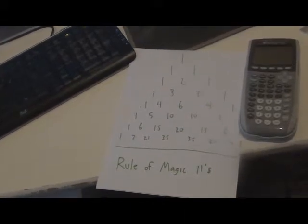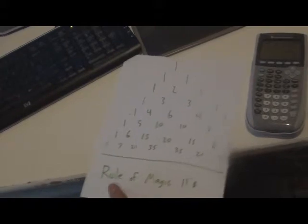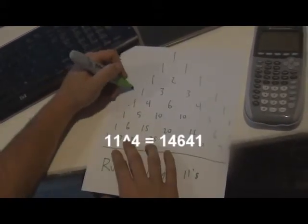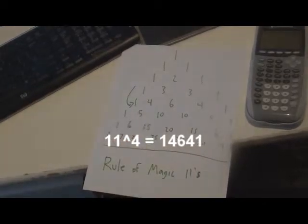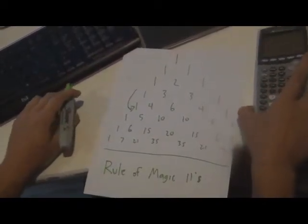This is a rule to help you solve for the powers of 11. The first five rows have the same pattern in Pascal's triangle. For instance, 11 to the fourth is 14,641, which also appears in the fifth row. These are the same coefficients that appear in the triangle.